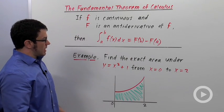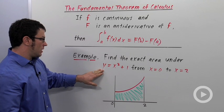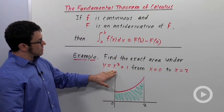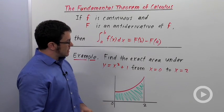Let's see how that works out in an example. Let's find the exact area under y equals x squared plus 1 from x equals 0 to x equals 2.